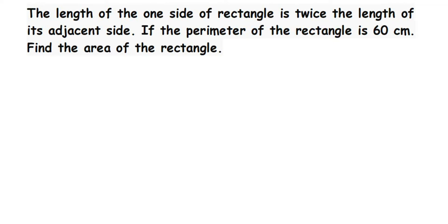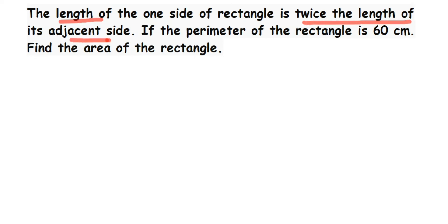Here is a question from perimeter and area. The length of one side of a rectangle is twice the length of its adjacent side. If the perimeter of the rectangle is 60 centimeters, find the area of the rectangle. They have given us a relationship between the length and the adjacent side, which is nothing but the breadth.